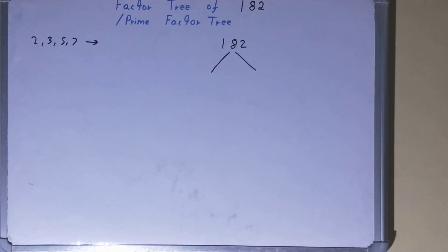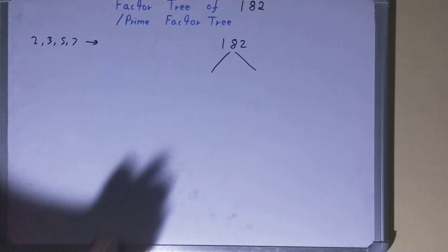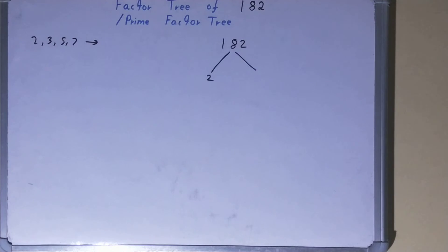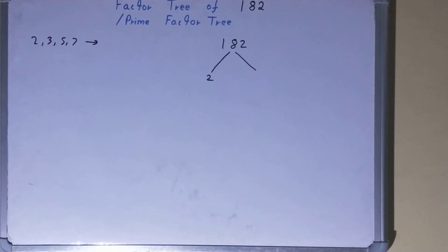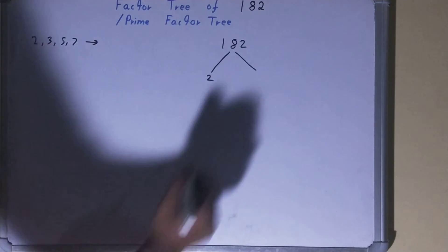Because of this, we check: is the number 182 divisible by 2? Yes. So one of the numbers will be 2, the other will be whatever we get after dividing. 182 divided by 2, we get 91.